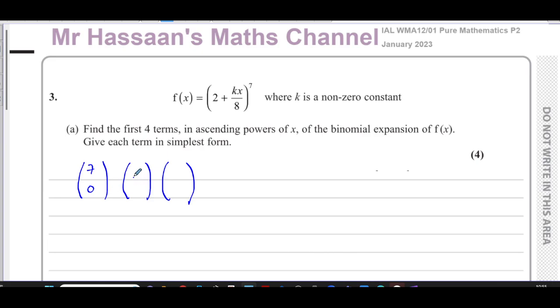Then I'm going to put the next number, which is two, and then I'm going to put the next term, which is kx over eight. They've told us to find the first four terms in ascending powers of x. So the x powers has to start from the lowest and go upwards. So this is going to have a zero as its power, because you start from the lowest one, and therefore, the other one has to be the highest power, which is seven.